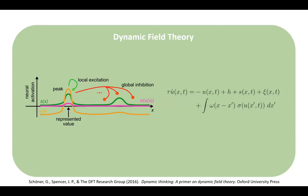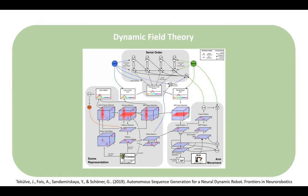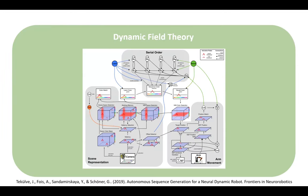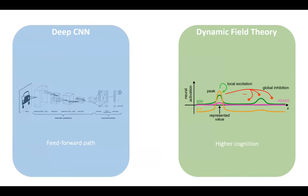What Dynamic Field Theory is, I think everyone knows. And probably everyone also knows that one can build dynamic field architectures to realize cognitive processes and motor behavior. These networks are defined by the directional coupling among the fields and eventually to sensory-motor interfaces, and autonomous sequences of processing steps emerge from the underlying dynamic instabilities of the dynamic neural fields.